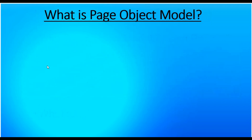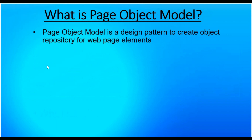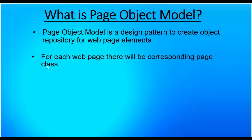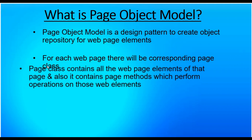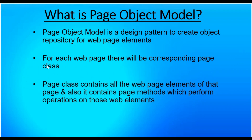So let's discuss what the Page Object Model concept is. Page Object Model is a design pattern to create an object repository for web page elements, and for every web page there will be a corresponding page class. Each page class contains web page elements and also abstraction methods which perform actions on that particular page.